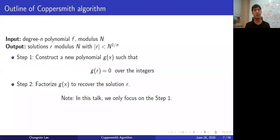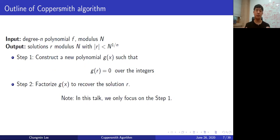From now I will try to go over the proof of the Coppersmith theorem. We input degree-n polynomial f and integer modulus N, and we want to find our small solution modulo N. This algorithm works by constructing an auxiliary polynomial G(x) so that any small solution is a root over the integers — instead of modulo N, we have solutions over the integers. After obtaining polynomial G(x), we can find its integer solutions with polynomial factorization, which is easy to compute. It can be replaced with other algorithms, for example Newton's method.